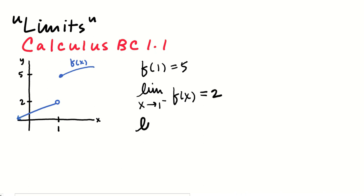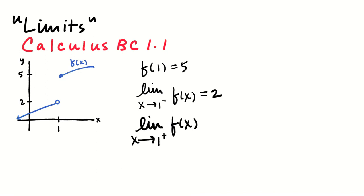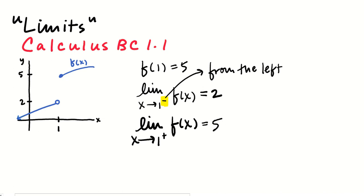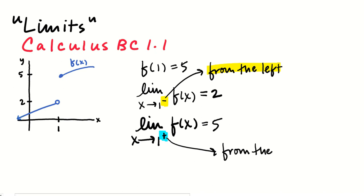If I instead ask about what was happening as x approached 1 from the right — from the positive side — something very different is happening there, because there are really two pieces of graph. As I'm approaching 1 from the right side in x, y is getting closer and closer to 5. So that limit is 5. The negative superscript means from the left, and the positive superscript necessarily means from the right.